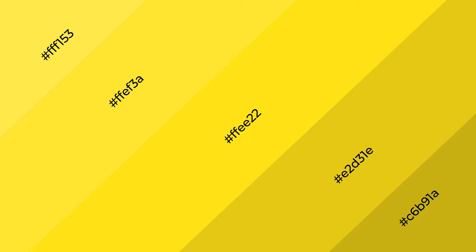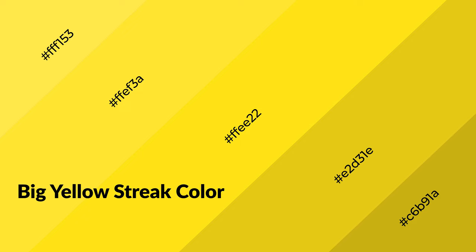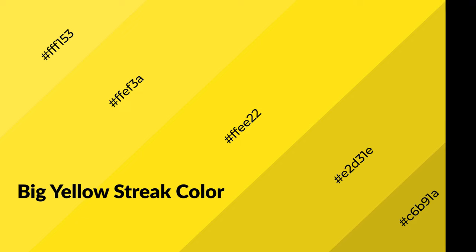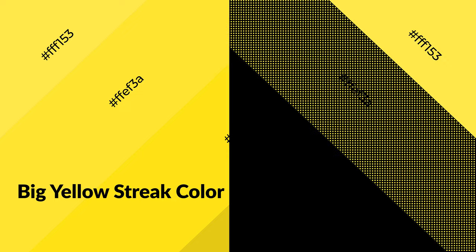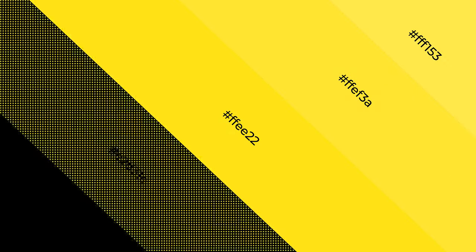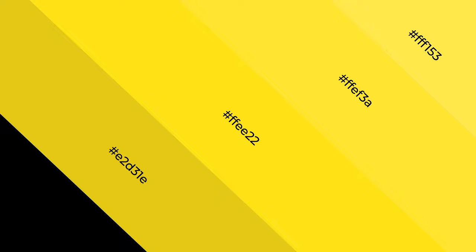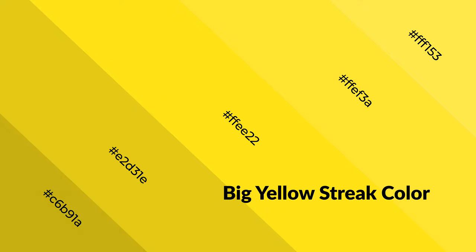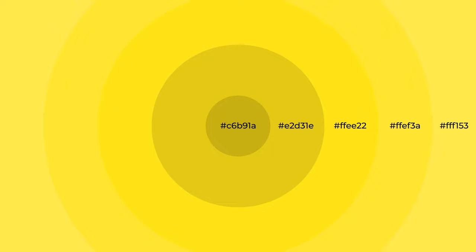Big yellow streak is a warm color and it emits cozier and active emotions. Warm colors are symbols of warmth, fire, heat, and sunshine. It also evokes joy, passion, love, and even anger. You can see them used in restaurants and gyms.